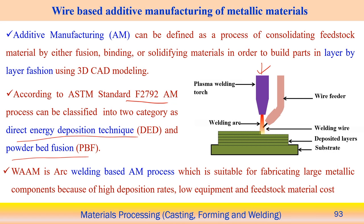When deposition happens, it must follow a certain controlled deposition strategy — layer thickness, layer path — defining the complete deposition approach. This layer-by-layer deposition using plasma arc and external wire feeder is the wire additive manufacturing process following the direct energy deposition approach. Powder-based additive manufacturing can manufacture very small, complex components with high precision.